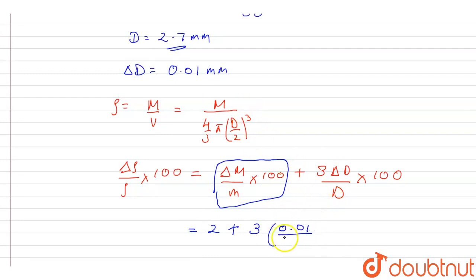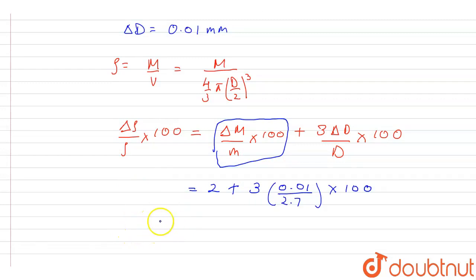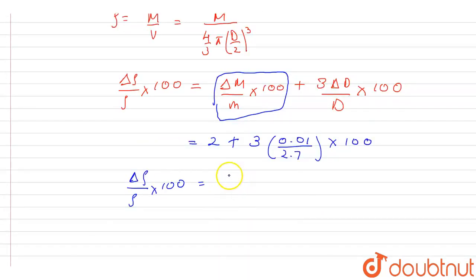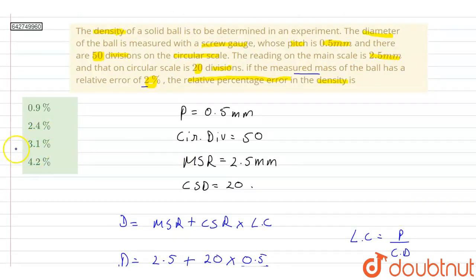So from here the relative percentage error of density, this value will be equal to delta rho upon rho into 100, which equals 3.1. So this is in percentage, 3.1 percent. So from here the correct option will be option C.